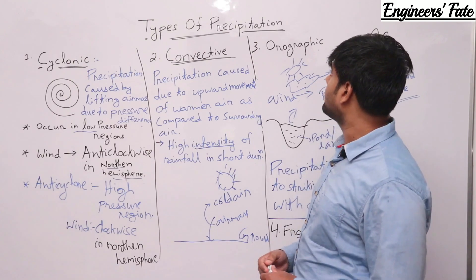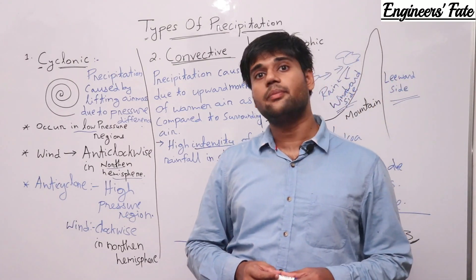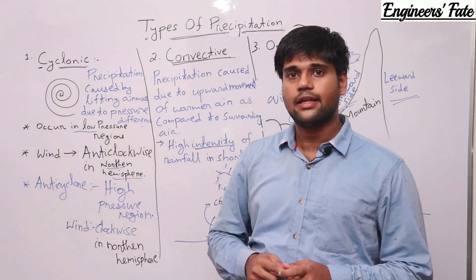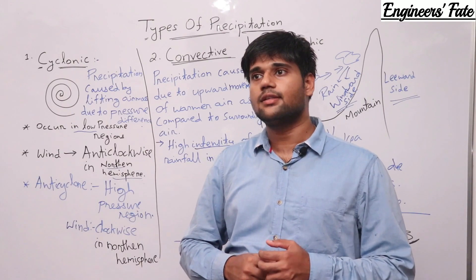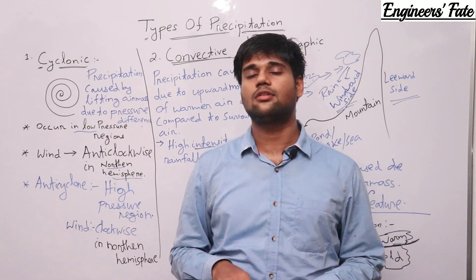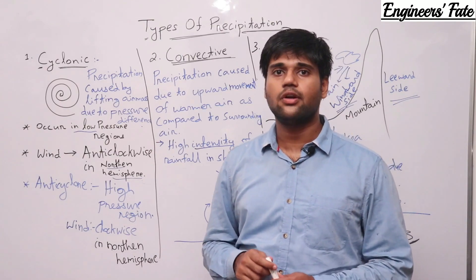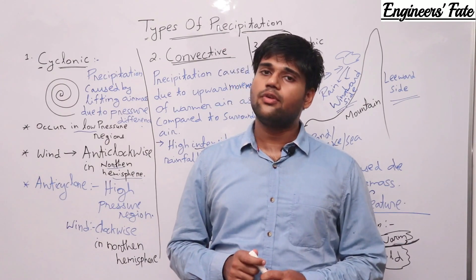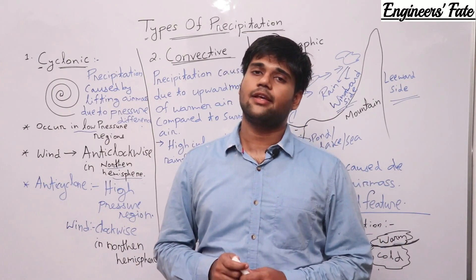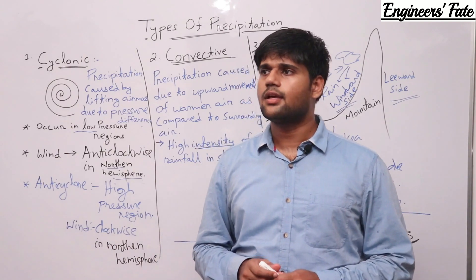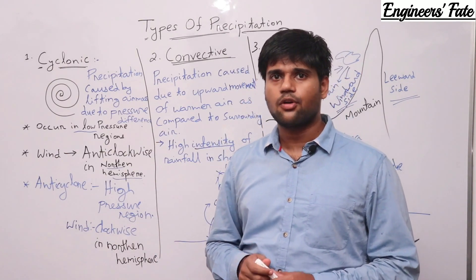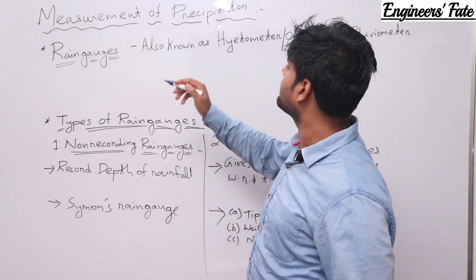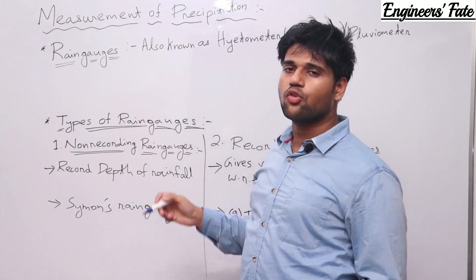So we have discussed the types of precipitation. Next, we will go to the types of rain gauges. I will tell only the important points and the rest you can read thoroughly from the book. I will discuss only those points which are mainly important from an exam point of view. Let's begin with the types of rain gauges and how to measure precipitation.